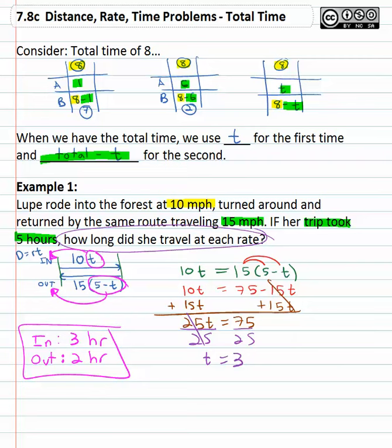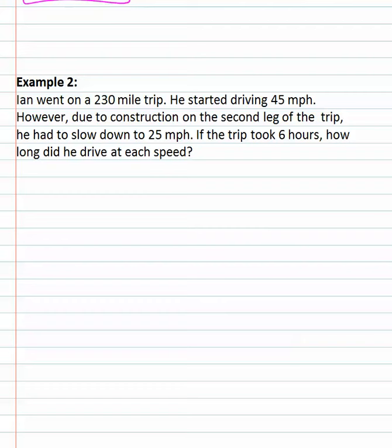Let's try another example where we're given the total time and we need to calculate the pieces. Ian goes on a 230-mile trip. He starts driving 45 miles per hour. Then there's road construction on the second leg of the trip, and he slows down to 25 miles per hour. The total trip took 6 hours. How long did he drive? We've got one distance added to the second distance to give us the total distance that Ian traveled of 230 miles.